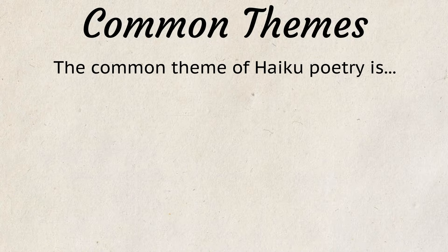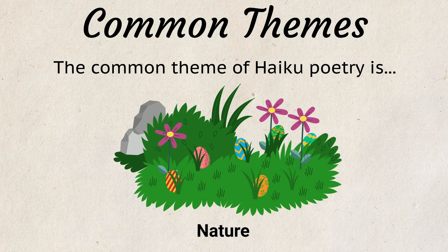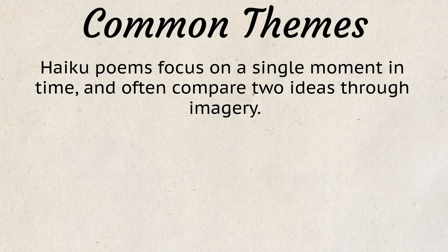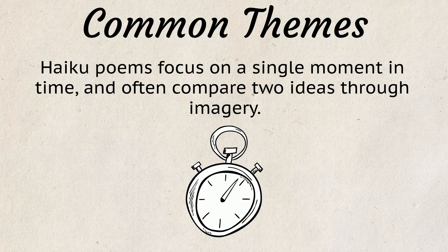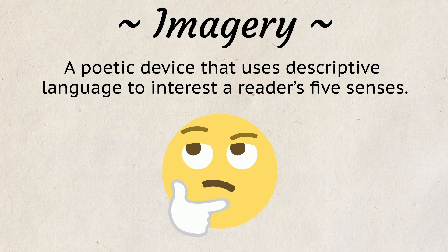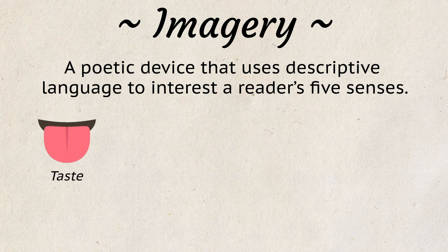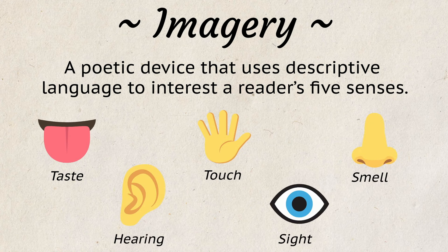The common theme of haiku poetry is nature. Haiku poems focus on a single moment in time and often compare two ideas through imagery. Imagery is a poetic device that uses descriptive language to interest a reader's five senses through taste, touch, smell, hearing, or sight.